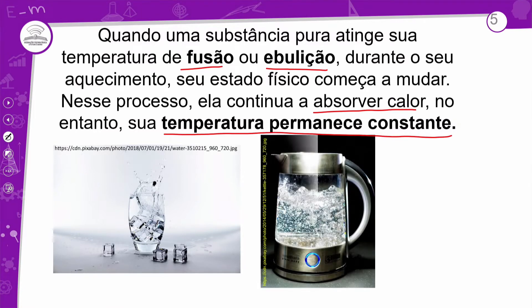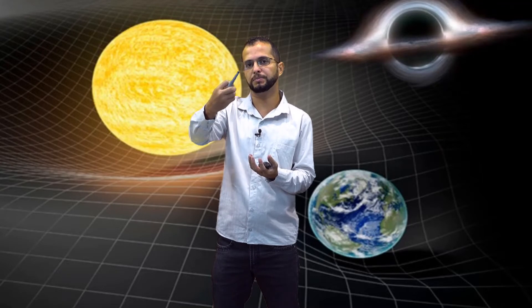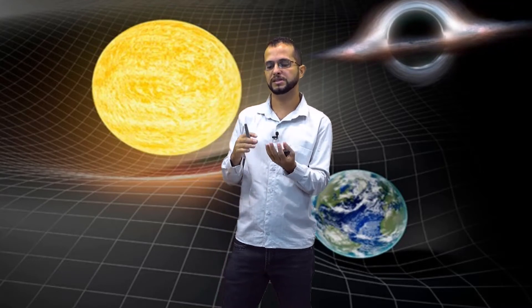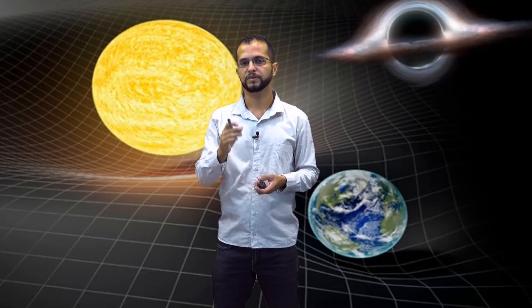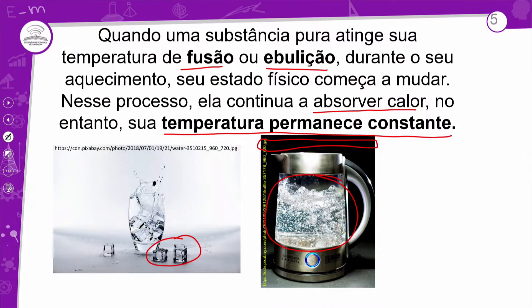Temos outro exemplo: a ebulição. Aqui, uma chaleira elétrica que você coloca pra aquecer a água — ela vai aquecendo e mudando de estado físico. Aqui o gelo derrete por fusão ou solidificação, e aqui a água evapora. Se você colocar uma tampa em cima, você vê que a tampa sempre fica molhada, porque a água condensa novamente. Numa panela fervendo, quando você abre a tampa, vê água nela — porque a água evaporou, pegou na tampa e resfriou, criando uma camada de água. Então você tem vaporização e condensação dentro de uma panela.